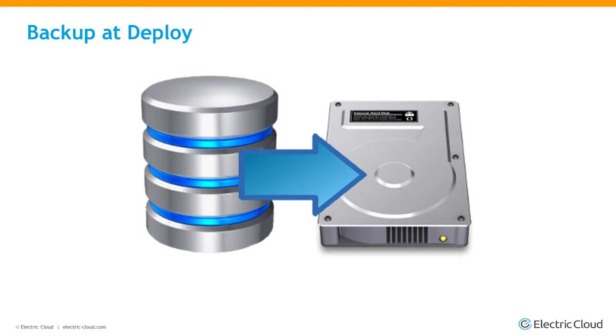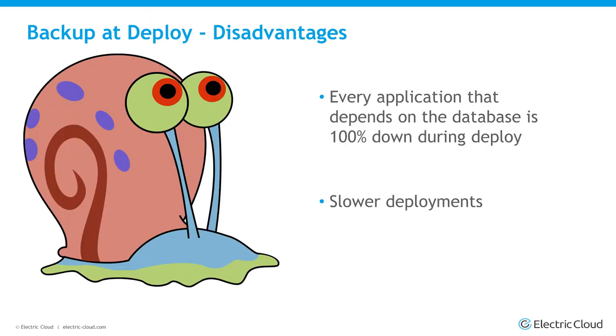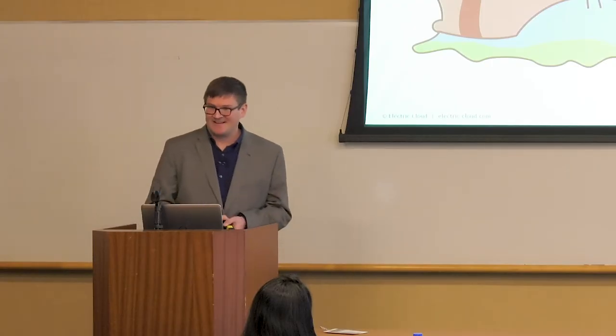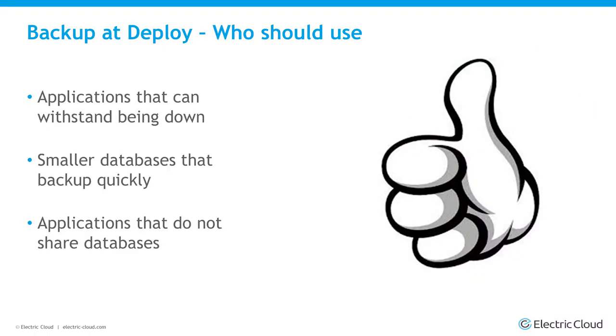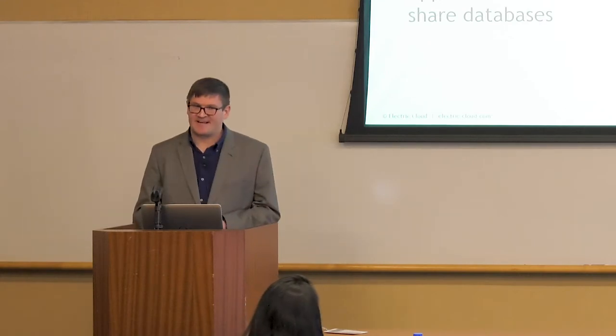The second method is backing up at deploy. Basically, you shut down your server, take an entire backup, deploy, then bring it back up. That will guarantee 100% you'll go back to the previous state — technically speaking, it's the safest way. The disadvantages: every application that depends on the database is down the entire time, and deployments are a lot slower, especially with a large database. But if your application can withstand being down for a bit and your database backs up in 30 seconds, there's no reason not to.